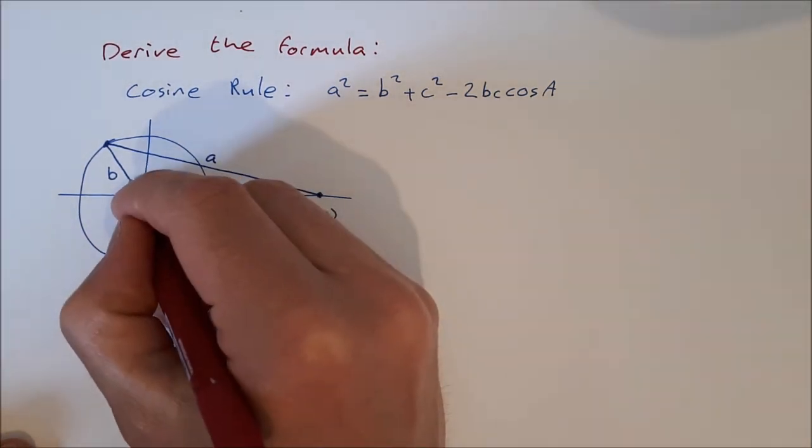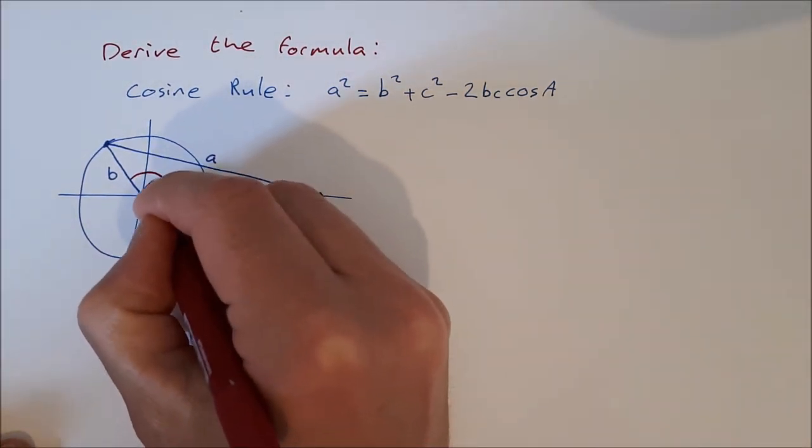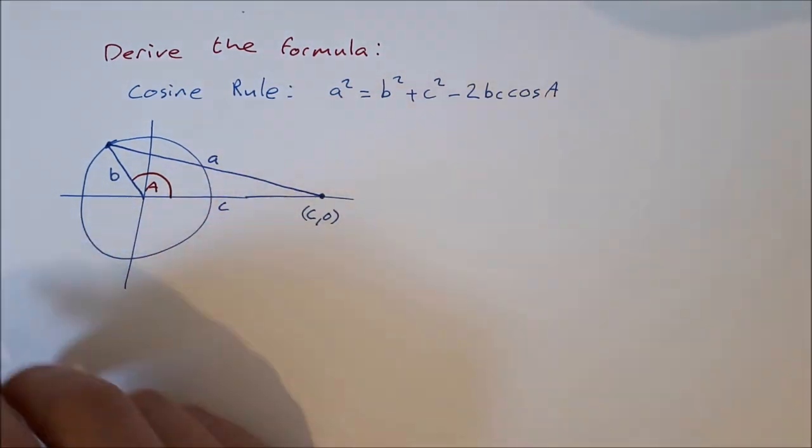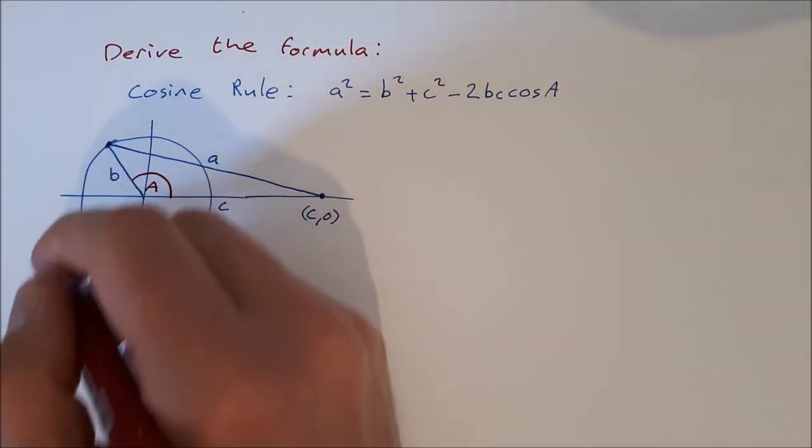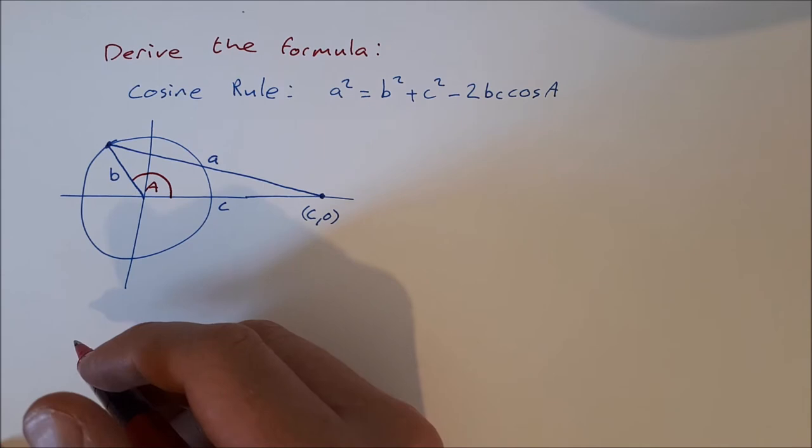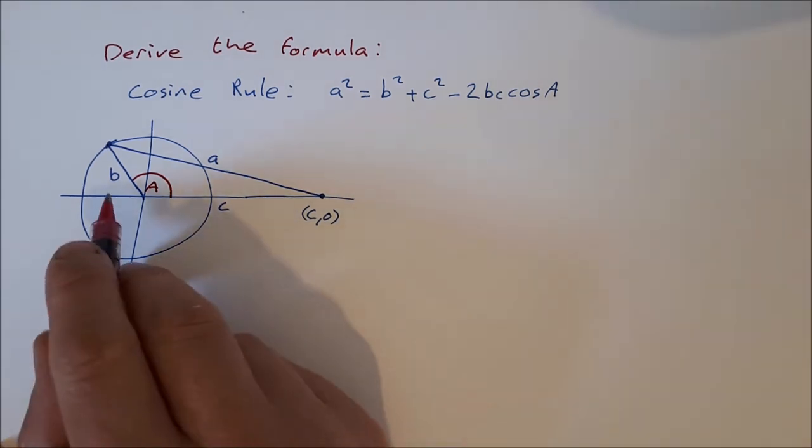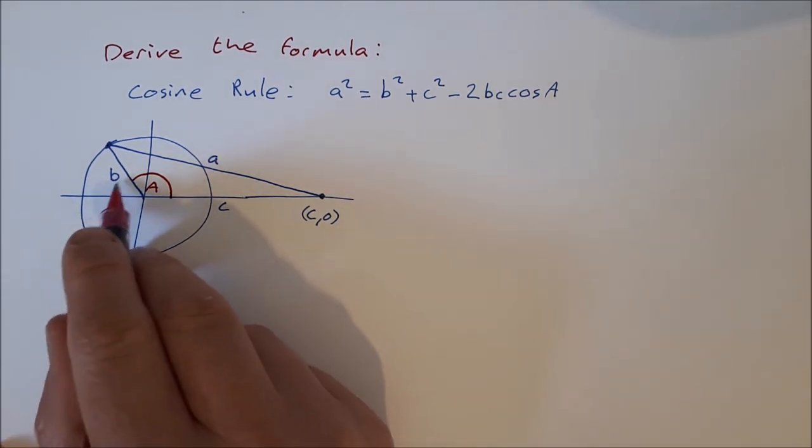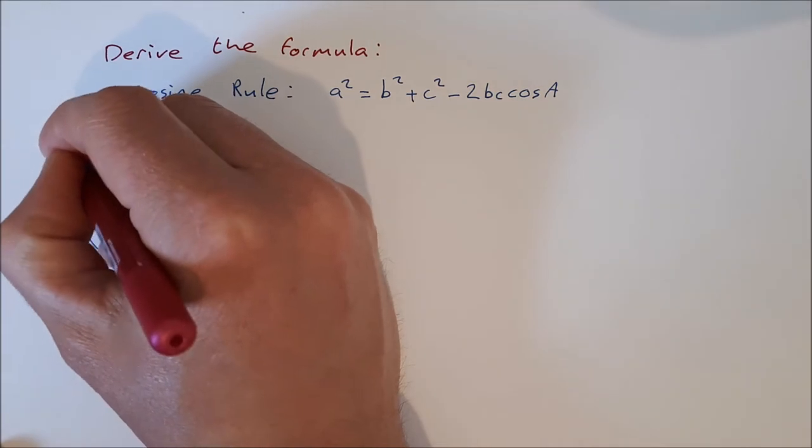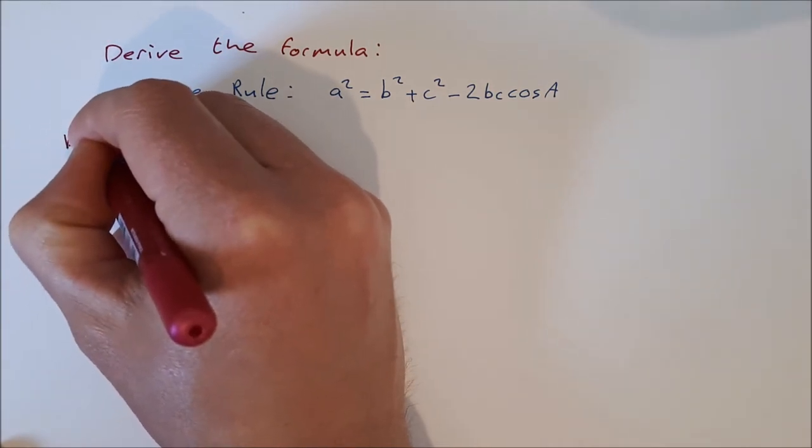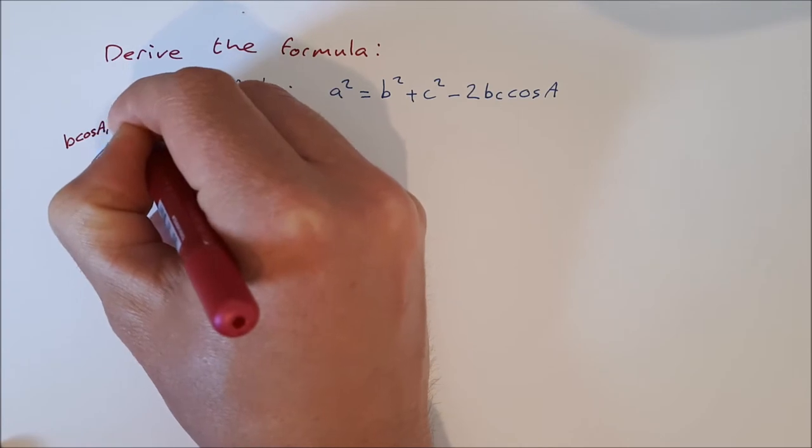This is going to be the angle A, and the coordinates of this point are similar to the unit circle, which would be cos A, sin A, but because the radius is b, it's b cos A and b sin A.